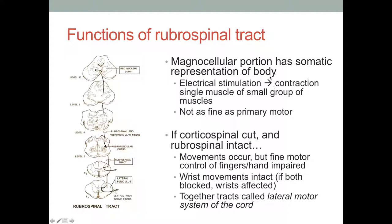Here you see on the left the brain sections associated with the rubrospinal tract. We have the red nucleus, an immediate decussation in these lower areas, traveling down the rubrospinal and rubroreticular fibers through the lateral area of the brain until we get to the lateral funiculus. Eventually ventral root nerve fibers pop out to go to any of the motor areas innervated. The magnocellular portion has somatic representation of the body — similar to the homunculus in other brain areas — meaning electrical stimulation of an area of the magnocellular portion will produce contraction of a single muscle or a small group of muscles. It's not as fine as primary motor, but it's a pretty good representation of the motor units.